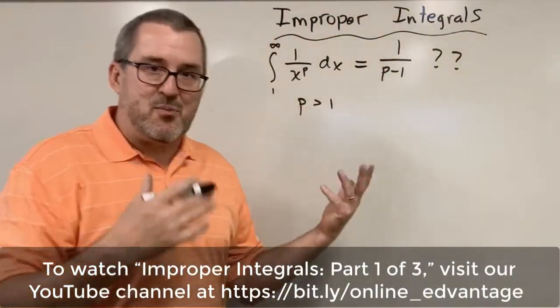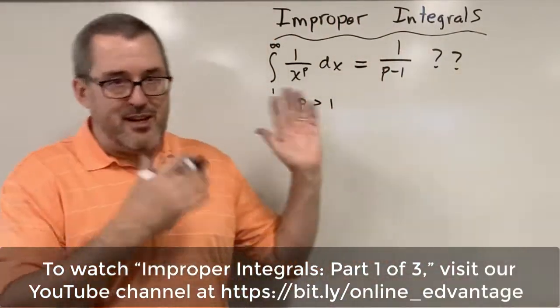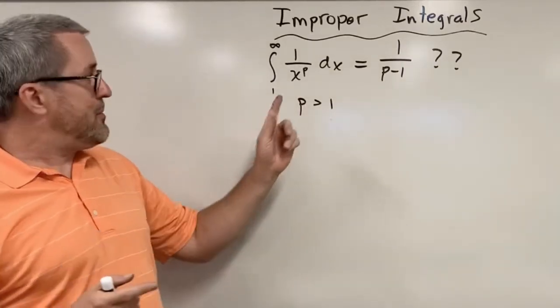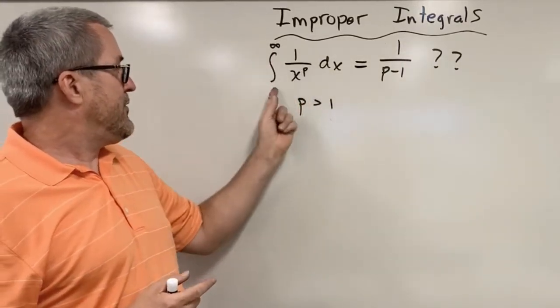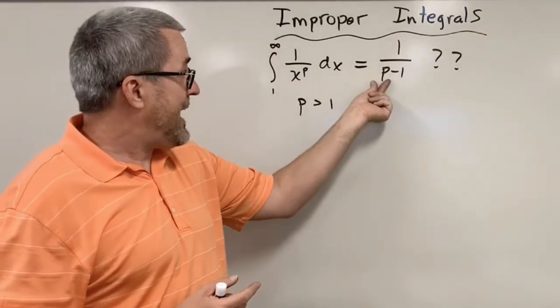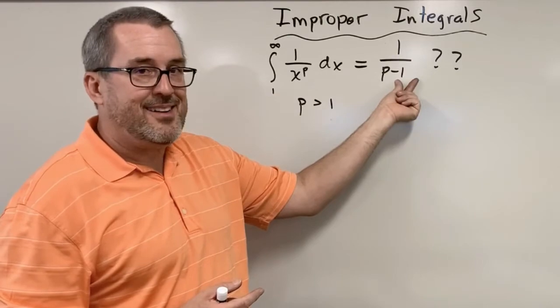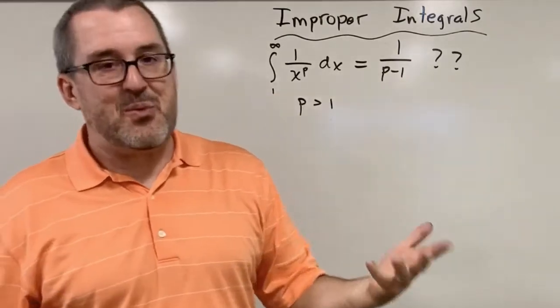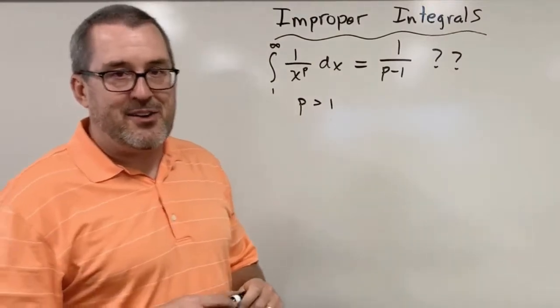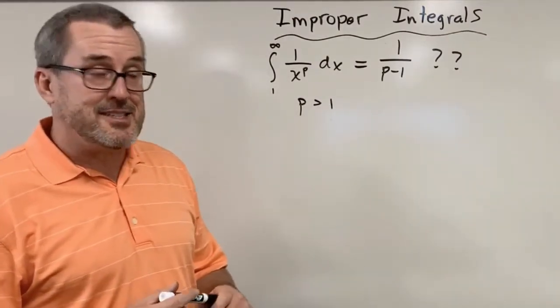We did some work previously with Desmos and on the board just to show a pattern, and it appeared that the pattern was this: the integral from one to infinity of one over x to the p was one over that power subtract one. Now I'm putting question marks here because we want to confirm that more rigorously than just seeing a pattern of a few instances of it happening.